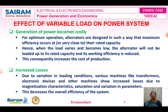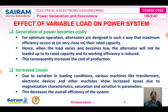Now we studied about the effect of variable load on the power system. Because the load can vary — with respect to time only, it is not constant throughout the day. The first effect is that the generation of power becomes costly. For optimum operation, the alternator is used to generate power. The alternators are designed so that maximum efficiency occurs at their rated capacity. If the load becomes low, the generator will not be loaded to its rated capacity, its working efficiency is reduced, and this consequently increases the cost of production.